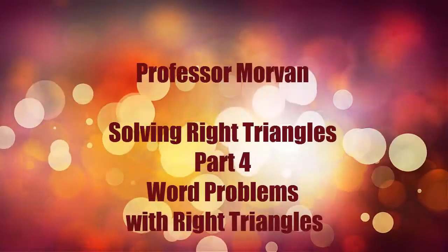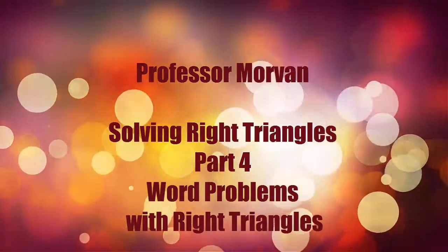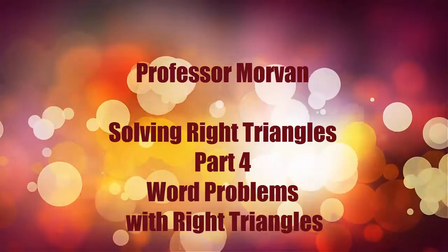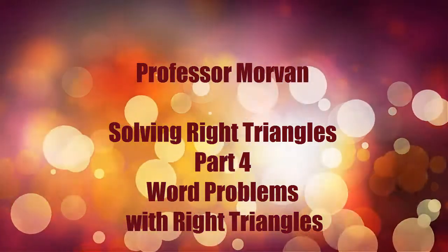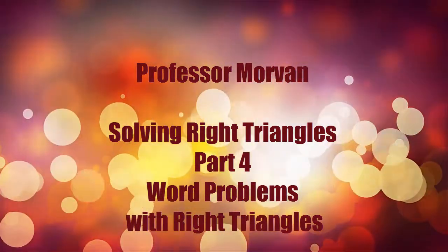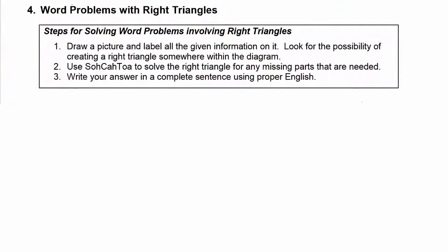In part four of our lesson on solving right triangles, you're going to learn how to solve word problems with right triangles in them. There are three basic steps. First, draw a picture and label all the given information on it, then look for the possibility of creating a right triangle somewhere within the diagram.